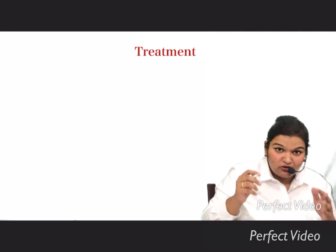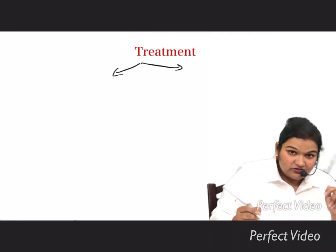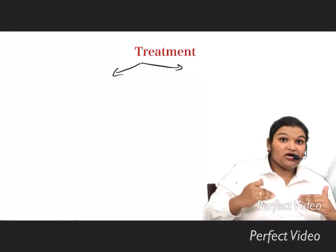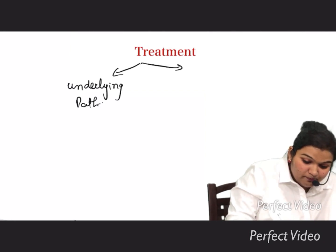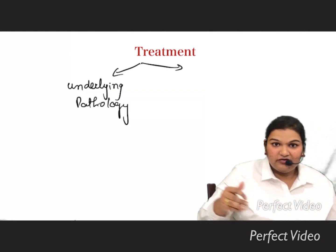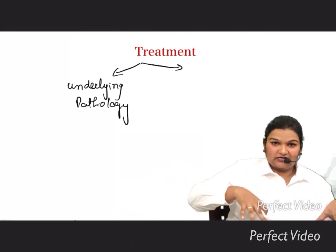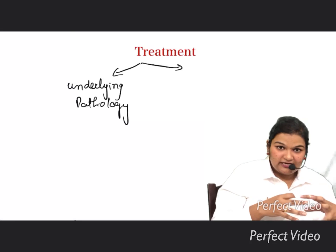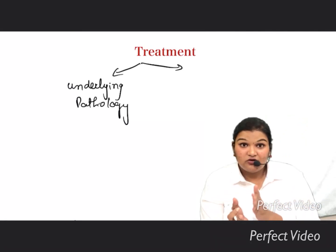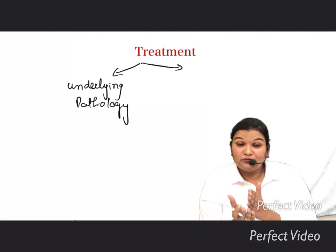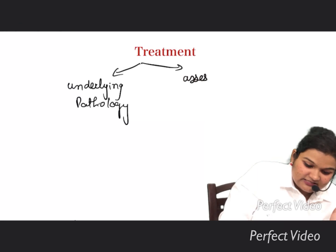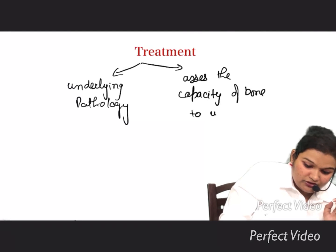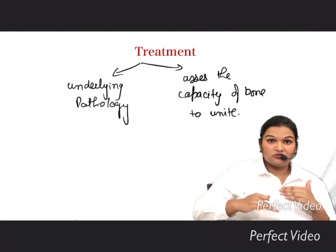In treatment, we approach it in two parts. First, we detect the underlying pathology and treat it. Second, we assess the capacity of the bone to unite — whether the bone is able to undergo union. Under these two headings we will see how to treat the fractures.